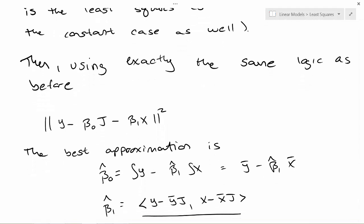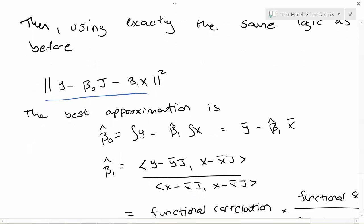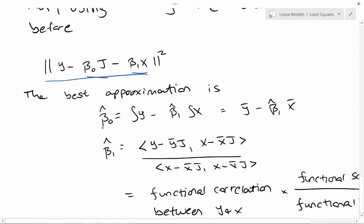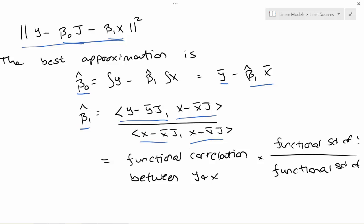So if we were to extend this logic, we just did the equivalent of mean only regression and regression through the origin. Then exactly through the same logic as before, the best approximation of the form beta_0 times j plus beta_1 times x has a beta_0 hat that looks like y bar minus beta_1 hat x bar. And beta_1 hat is going to be the inner product of the centered y and the centered x over the inner product of the centered x with itself.